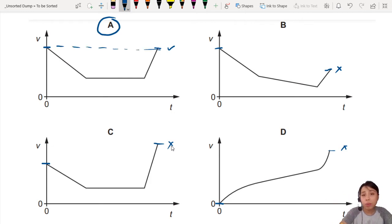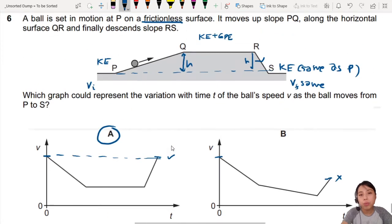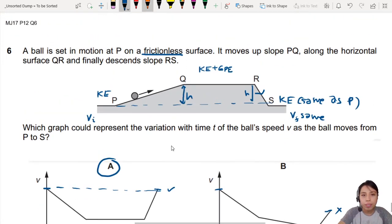You start off with some velocity, you should end up with the same velocity. Because you are still moving horizontally. Here, the ball is moving horizontally. At the end, it's still horizontal. So, same velocity.